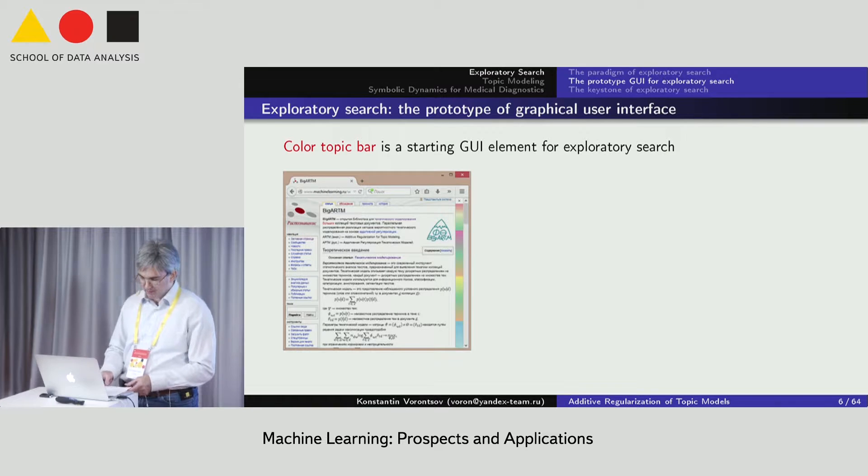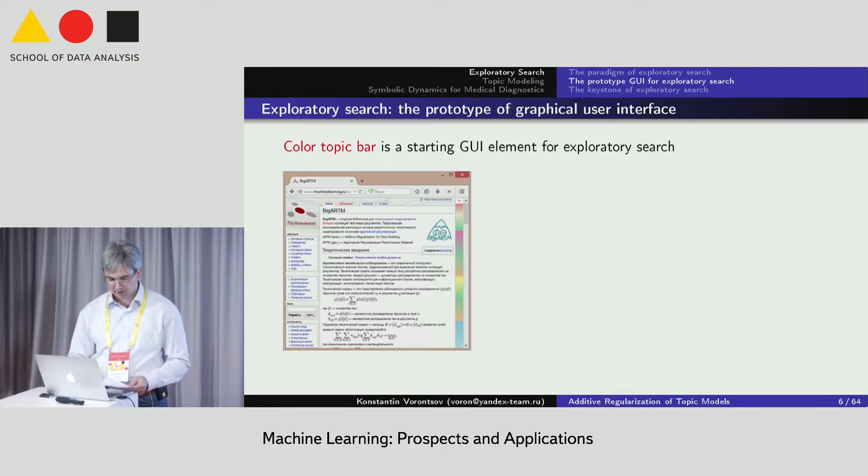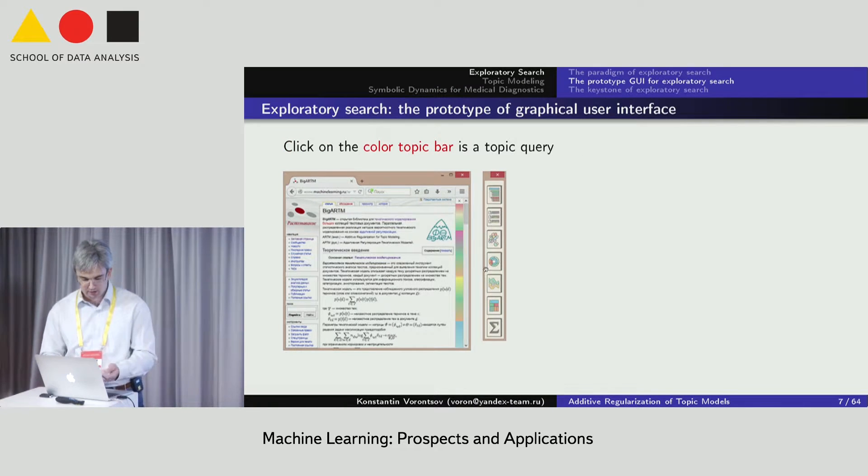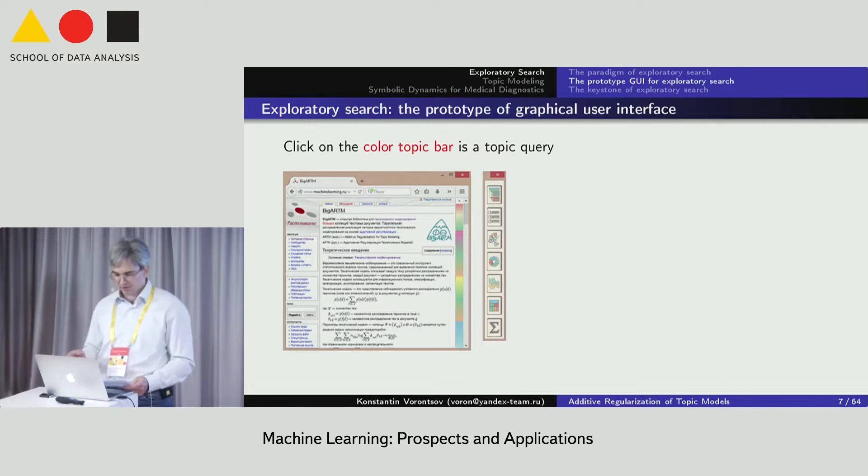In our concept scenarios, the user starts the exploratory search from a text query of any size opened in a browser, a text editor, email editor or any other text application. The color bar at the right side of the text window reflects the inner topical structure of the document. Different colors denote different topics. User clicks a color bar to get textual and graphical representation of topics. This is one click entry point into exploratory search as well as a reminder that knowledge is always at hand.